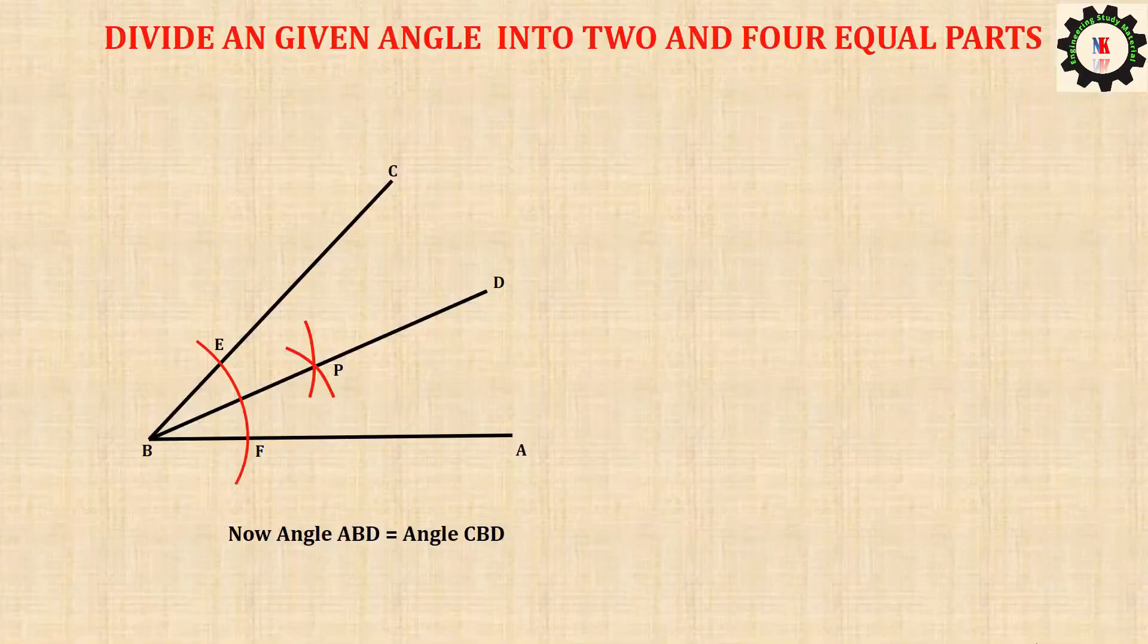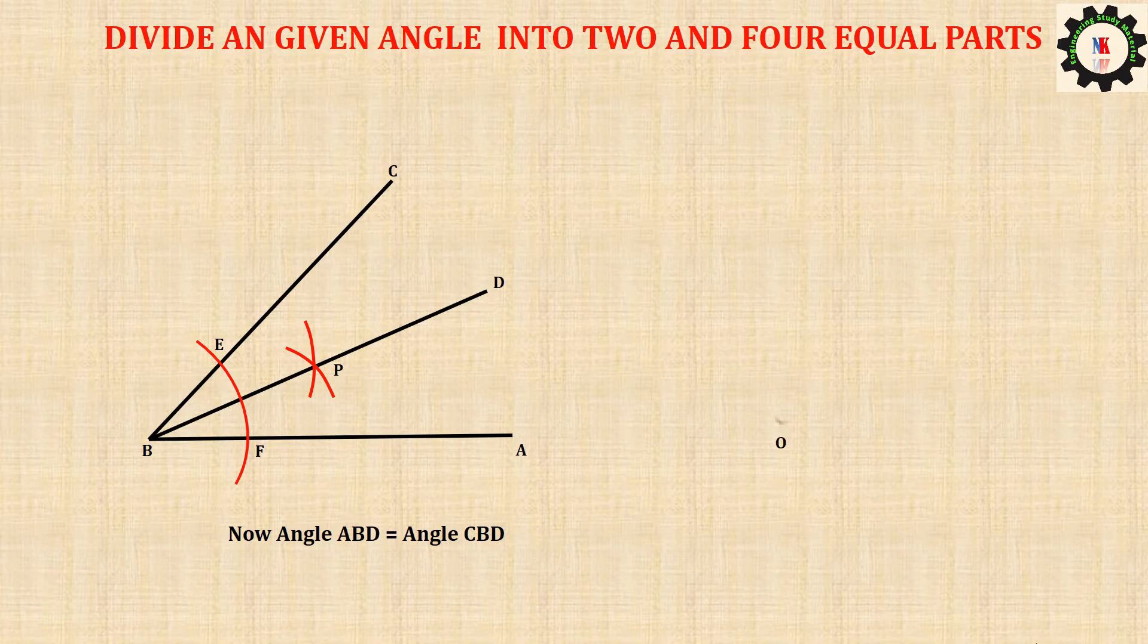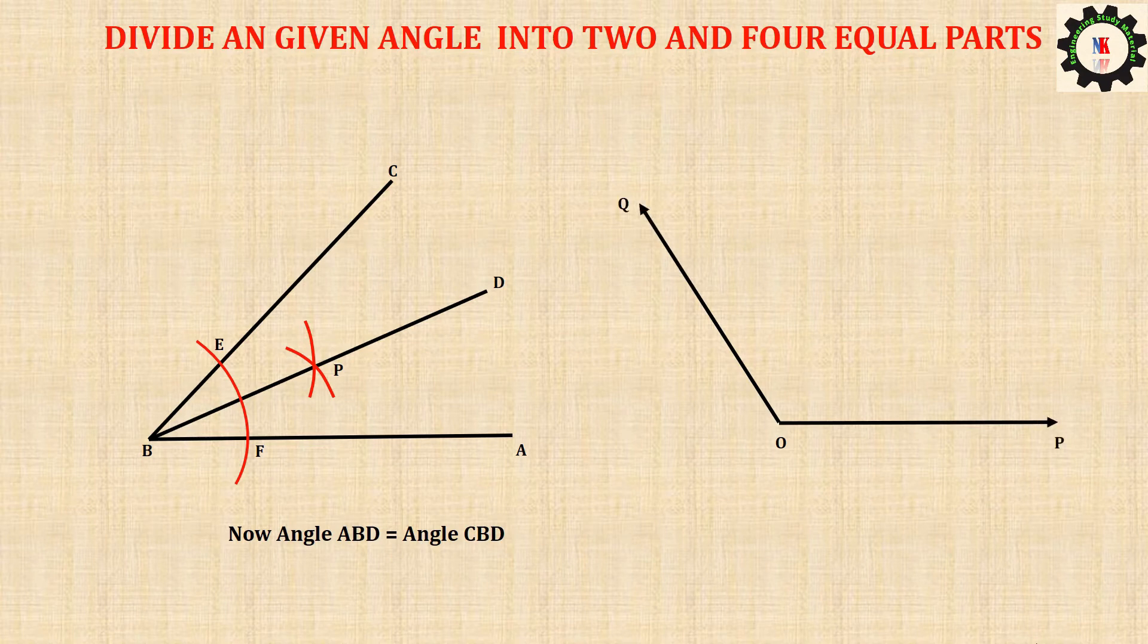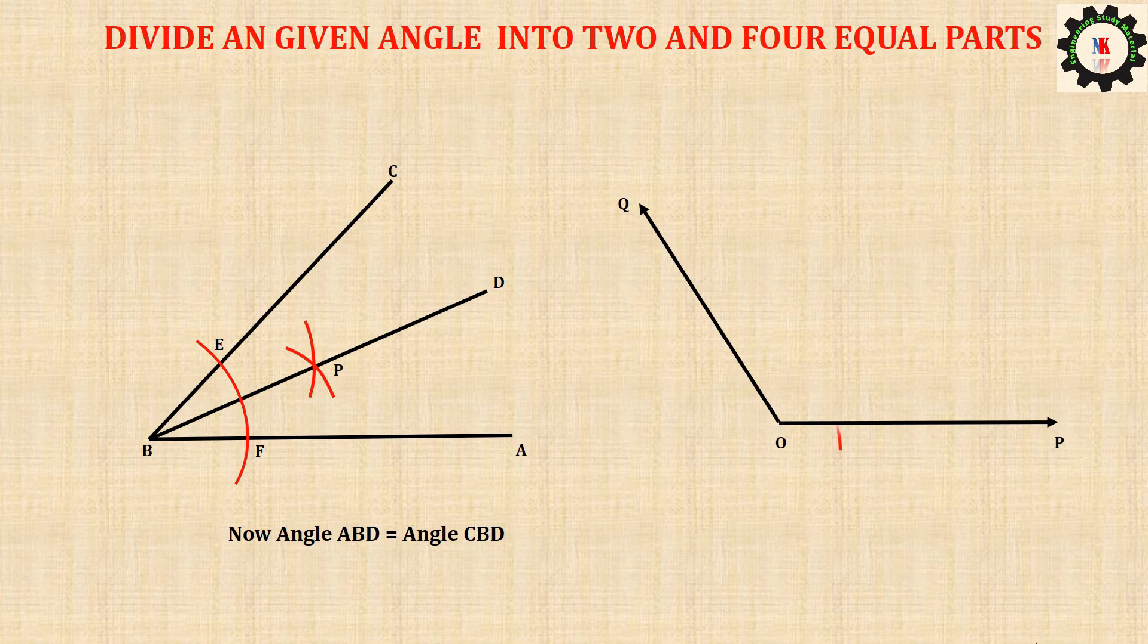Construct an angle, say angle POQ equals 120 degrees. With O as center and with any suitable radius, draw an arc to meet OP at R and OQ at S.